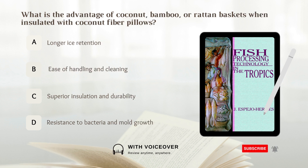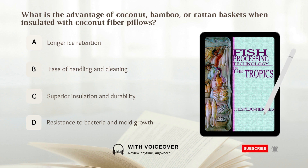What is the advantage of coconut, bamboo, or rattan baskets when insulated with coconut fiber pillows? Options: A. Longer ice retention. B. Ease of handling and cleaning. C. Superior insulation and durability. D. Resistance to bacteria and mold growth. Answer: A. Longer ice retention.